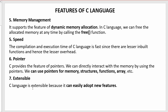The last feature is extensible. C language is extensible because it can easily adopt new features. C is capable of adopting new changes — if your requirements get updated and you need to change existing code, you will not find any difficulty adopting those new changes in your old C programs. These are some of the key features of C language.